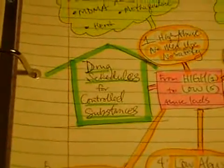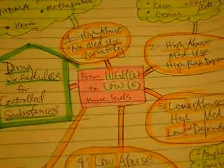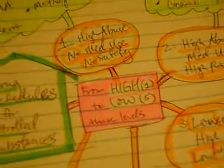Drug Schedules for Controlled Substances. It basically ranks from high, number one, to low, number five, in abuse levels.